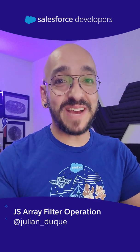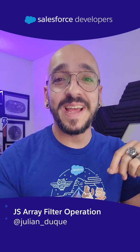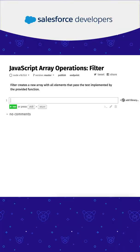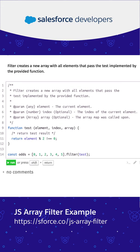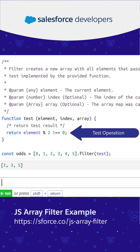Let's learn how to do a JavaScript array filter operation in one minute or less. A filter operation creates a new array with all the elements that pass the test implemented by a provided function. This function can be either named, anonymous, or an arrow function.